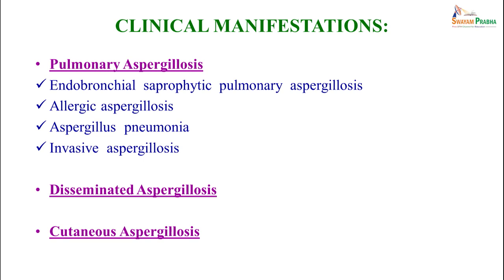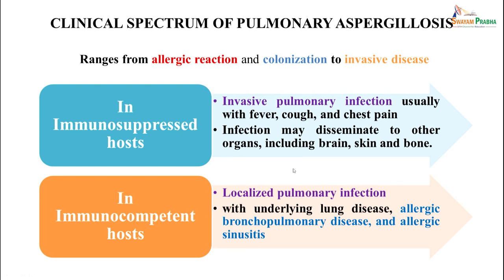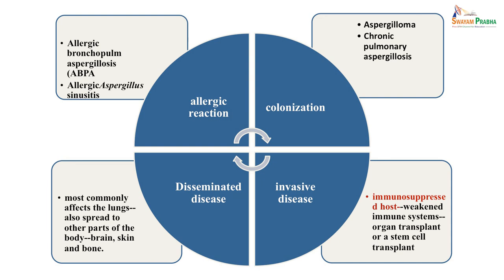Clinical manifestations of aspergillosis include pulmonary, disseminated, or cutaneous forms. Pulmonary aspergillosis ranges from allergic reactions and colonization to invasive disease. In immunocompetent patients it causes a localized infection, often in those with underlying allergic bronchopulmonary disease or rhinosinusitis. In immunosuppressed patients, invasive pulmonary fungal infection presents with fever, cough, and chest pain, and can disseminate to other organs.